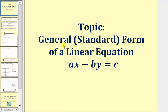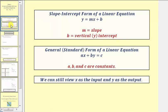Welcome to a lesson on the general form of a linear equation. So far, we've been working with the slope-intercept form of a linear equation, which is the form y equals mx plus b. This form is very convenient because we can easily identify the slope, which is the coefficient of x, as well as the vertical intercept, which is equal to b.